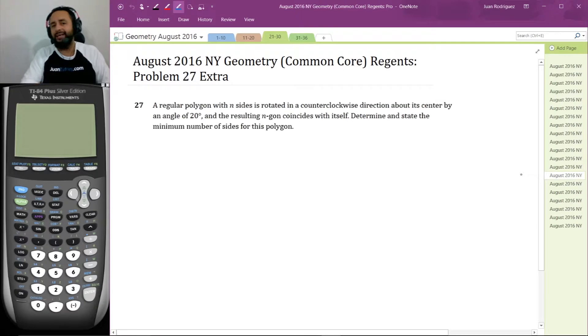It's a regular polygon with N sides is rotated in a counterclockwise direction about its center by an angle of 20 degrees. So now they told us the number of degrees, but they told us it has N sides, which we don't know what N is. And the resulting N-gon coincides with itself. Determine and state the minimum number of sides of this polygon. Well, let's think of this example.